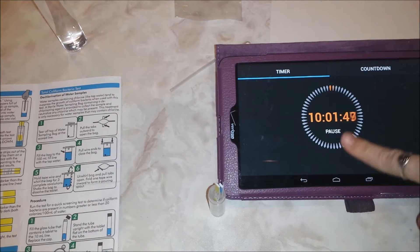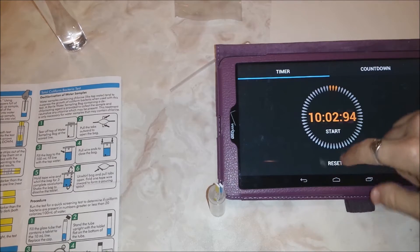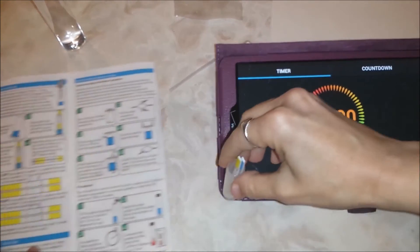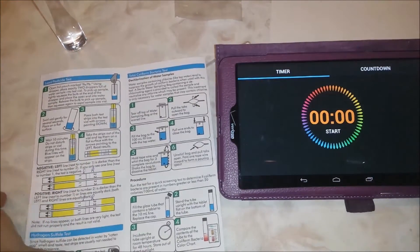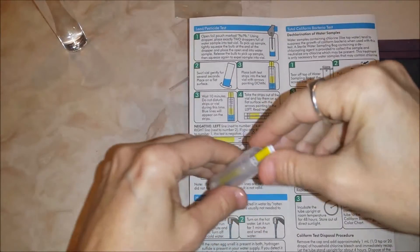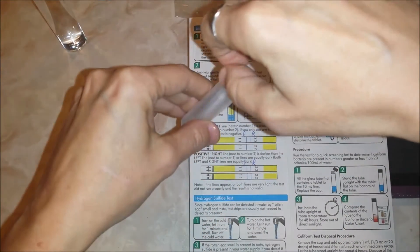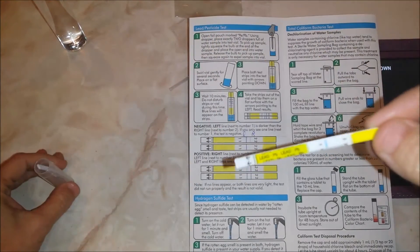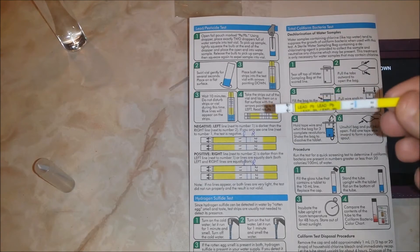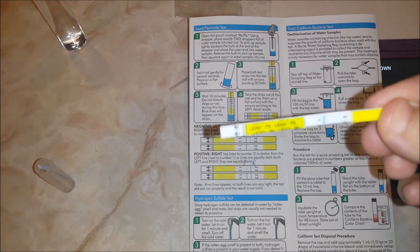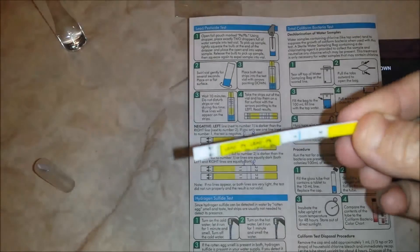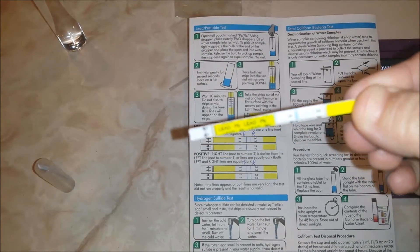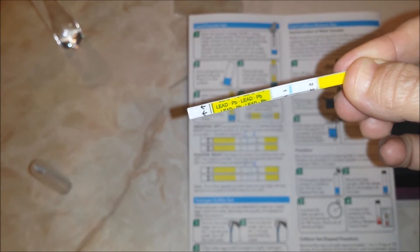It's been 10 minutes. Now let's go ahead and read them. Remember if the line's toward the left, it's negative. So we have lead. The line toward the one, toward the left, is way darker than that super fine line right there - super fine line to the right. So this is a negative test.